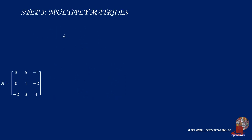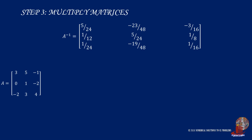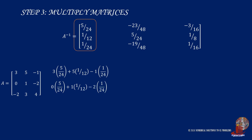The last step is to work on the multiplicative inverses of matrices, so take the product of the original matrix A and its inverse. From the first column, we start on the first row: 3 times 5/24, plus 5 times 1/12, minus 1 times 1/12, minus 1 times 1/24, which gives 0. Then on the last row, we have negative 2 times 5/24, plus 3 times 1/12, plus 4 times negative 1/24, which still gives 0.